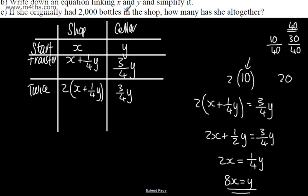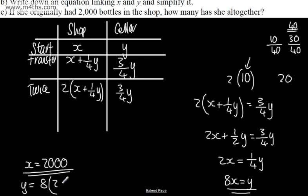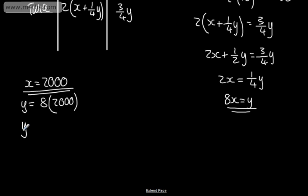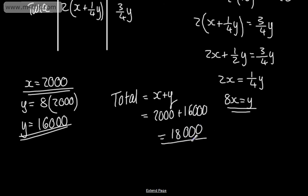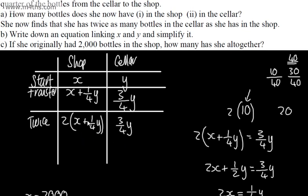If she originally had 2,000 bottles in the shop, how many does she have altogether? x is equal to 2,000. We know y equals 8x, so y equals 8 times 2,000, which is 16,000. The total is x plus y, which is 2,000 plus 16,000, giving us 18,000 bottles in total.